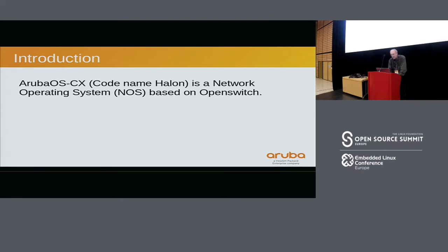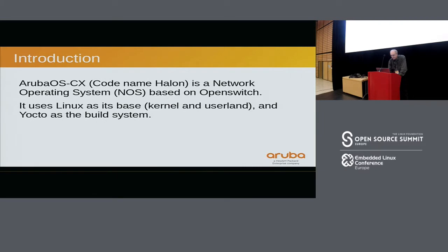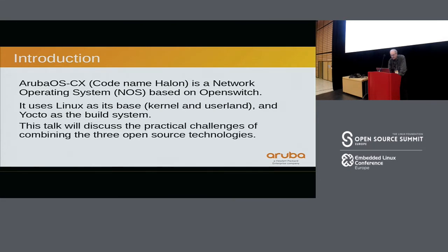A network operating system is basically a command set that looks a lot like a Cisco switch — things like turning off a port, you say 'shut', but to turn on a port you say 'no shut'. It's based on OpenSwitch, and it's based on Linux underneath it all, both the kernel and the user land. All the applications are based on Linux, GCC, and Yocto as a build system. This talk will discuss the practical challenges of combining those open-source technologies.